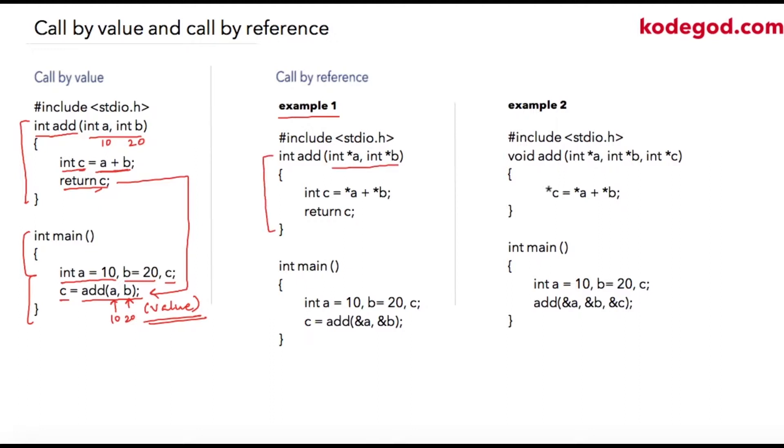Then I am writing star a star b, adding them and storing it into c. So what star a is doing over here and what star b is doing over here I will explain you in a bit, and then I am returning c.